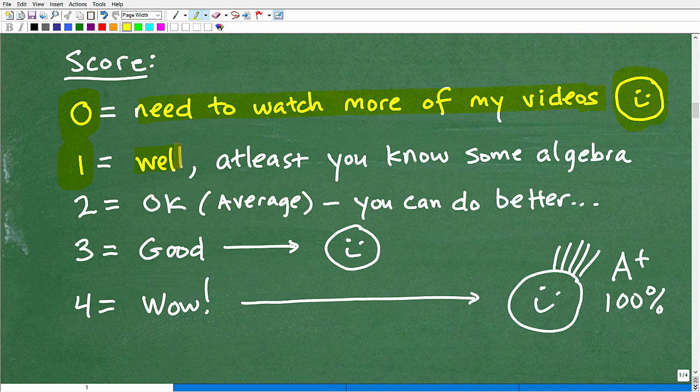All right. Let's say you got 1, right? If that's your situation, well, at least you know some Algebra, right? Let's not be too negative here. Matter of fact, let's not be negative at all. For those of you that got 2 out of 4, well, okay, that's average, but you can do better. That's not bad. It's not great. But, you know, you're showing that you know some Algebra. What if you got 3? Well, that's pretty good, okay? Matter of fact, so good that I would definitely give you a happy face, all right, on your quiz. But, you know, the happy face, we could do better than a happy face because if you got all 4 right, well, then wow, right? I'm going to give you a happy face with a mohawk, an A plus and 100%.